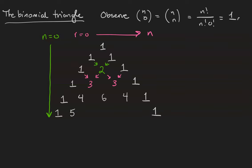5 choose 1 is 5. 5 choose 2 is 10. 5 choose 3 is 10, as we just saw. 5 choose 4 is 5.